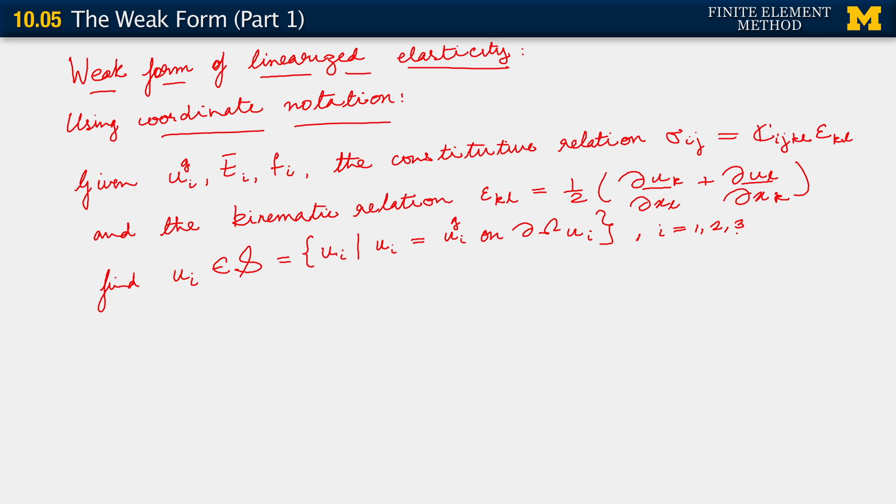Find u_i belonging to S of this type such that for all w_i belonging to V, which now consists of all functions which satisfy the homogeneous boundary condition on the corresponding Dirichlet boundary. Here too we imply that i equals 1, 2, 3.